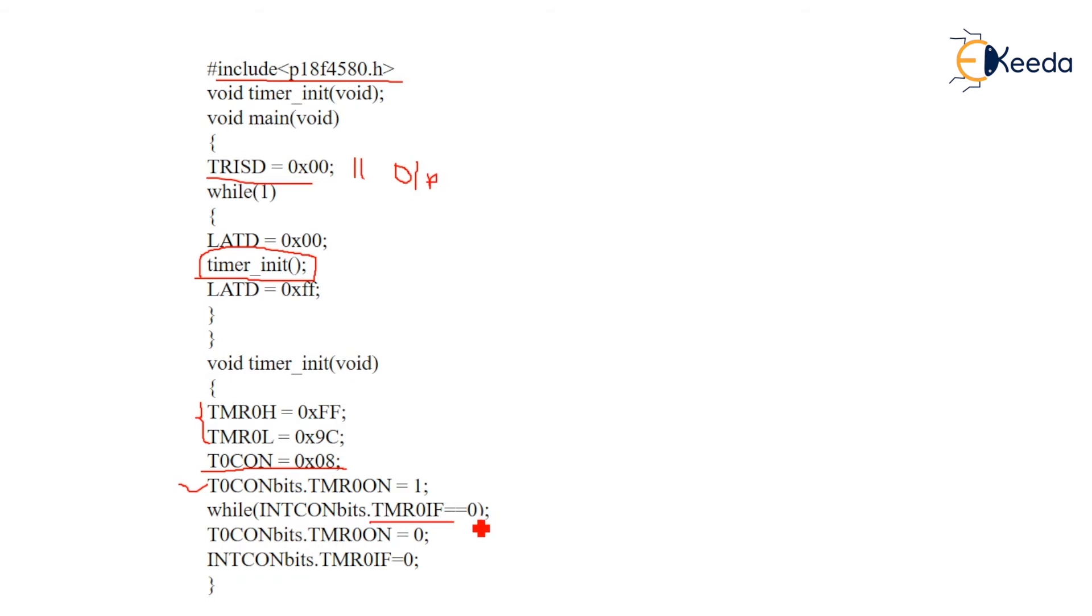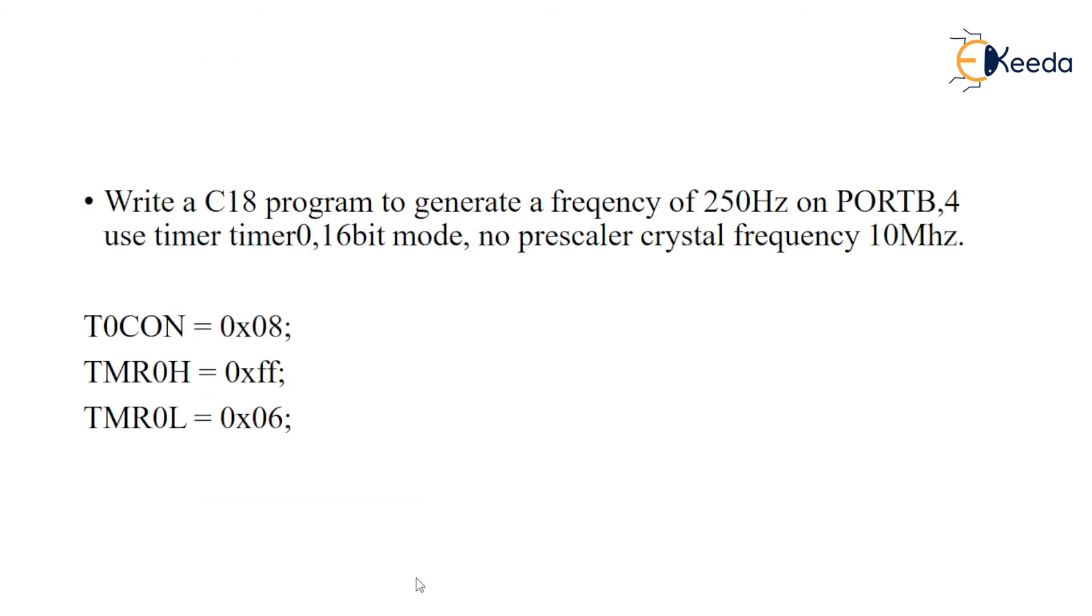If it is 0 then stop the timer and clear the interrupt flag. One example I have given: write a C18 program to generate a frequency of 250 hertz on Port B - that means we have to toggle this bit with 250 hertz using Timer0 16-bit mode, no prescaler, crystal frequency 10 megahertz. I have already calculated this value, you can also calculate with this reference.